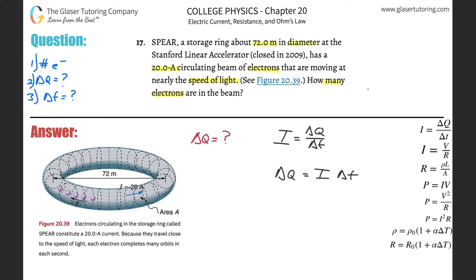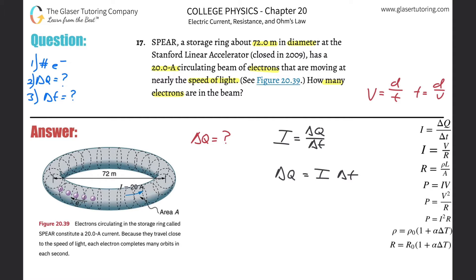Diameter could be used to find the length, the distance. How would those be related? Via the simple formula: velocity equals distance over time. I can find the distance because I know the diameter of the circle. And did they say anything about velocity? The electrons are traveling nearly at the speed of light. So I'll solve for time: time equals distance divided by velocity. Then I substitute that in for my time, giving: change in charge equals current multiplied by distance divided by velocity.